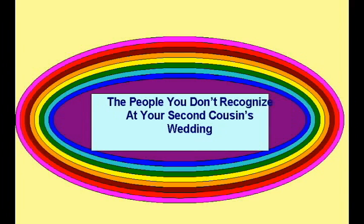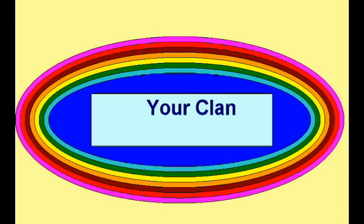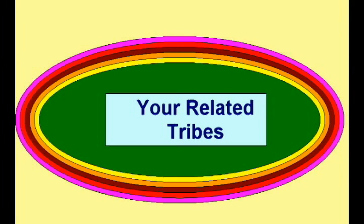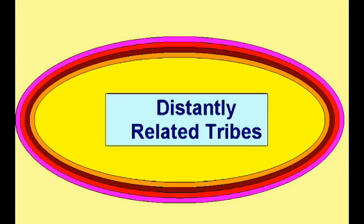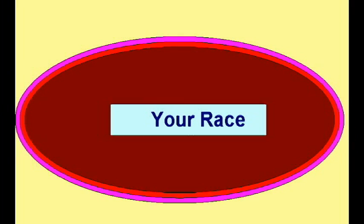This type of relationship is a nested hierarchy. Each group can be divided into smaller groups, representing lineages which are more closely related. In the same way, all living organisms seem to be related in a nested hierarchy of relationships.